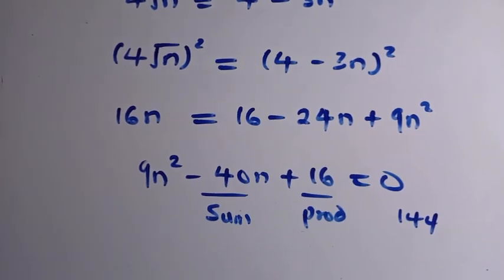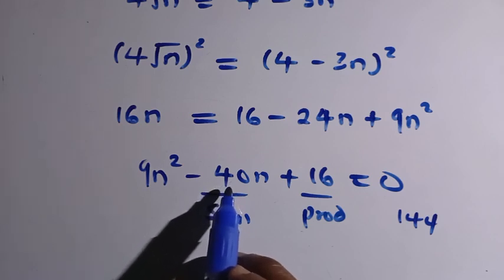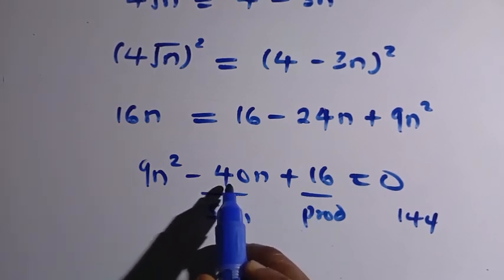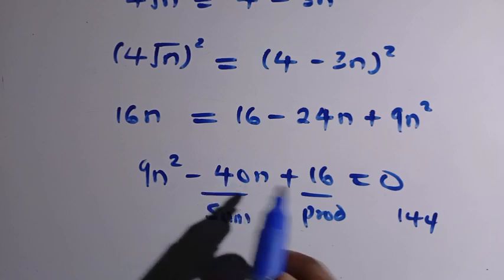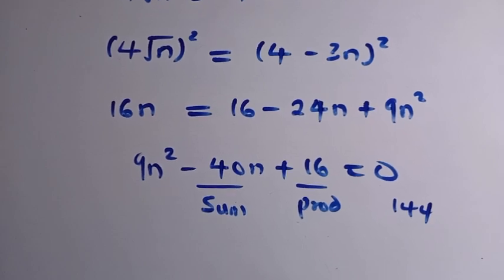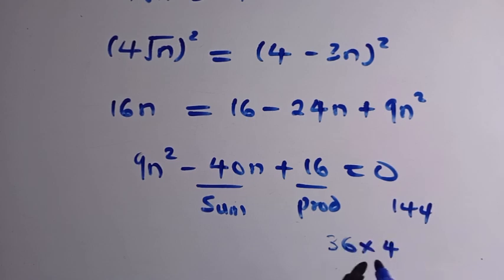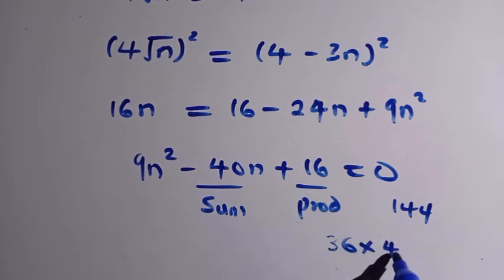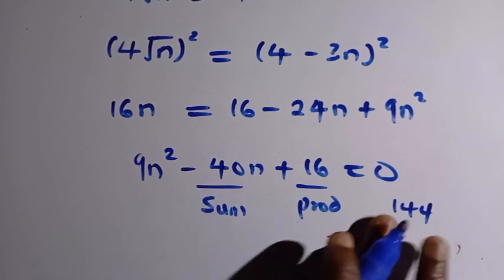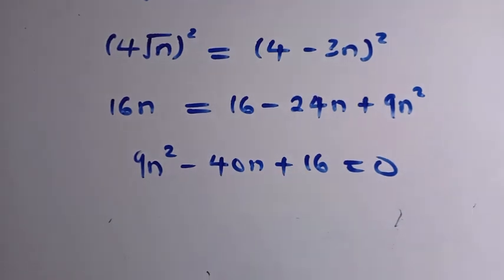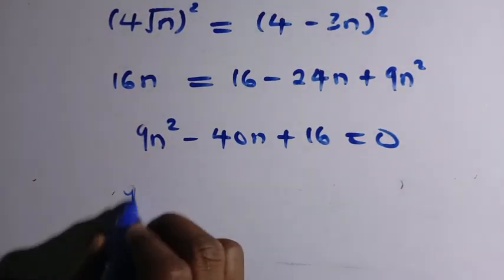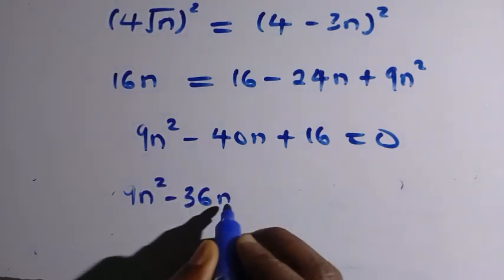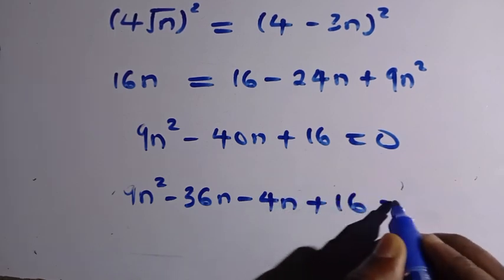We find that 36 times 4 equals 144, and 36 plus 4 equals 40. So we replace the middle term: 9n² minus 36n minus 4n + 16 equals 0.